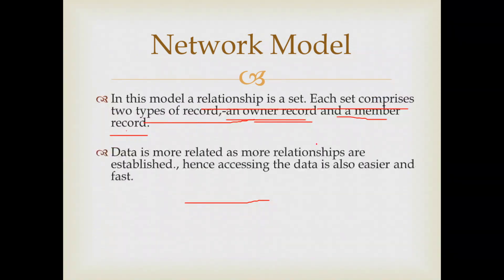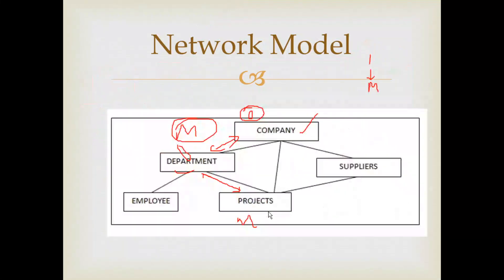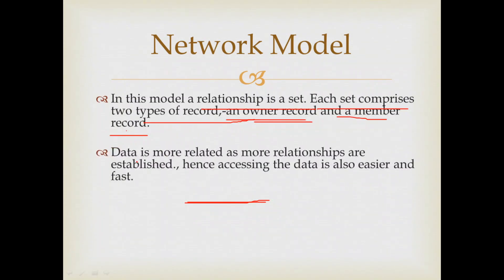In the hierarchical model, it is restricted to one-to-one or one-to-many. But in the network model, it is used to represent many-to-many relationships. For example, a project can relate to a department, a supplier, and a company — these are many-to-many relationships. As more relationships are established, data is more related, and hence accessing data is also easier and fast.